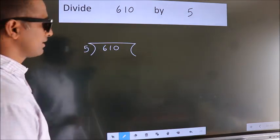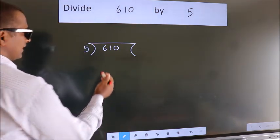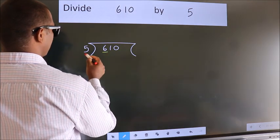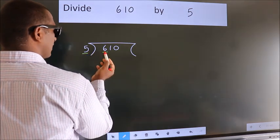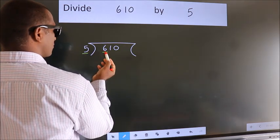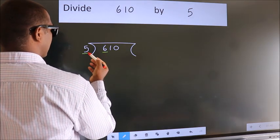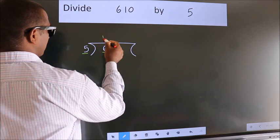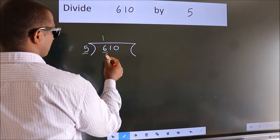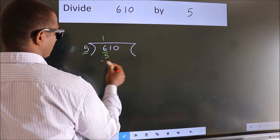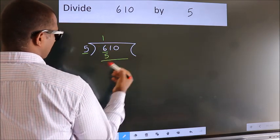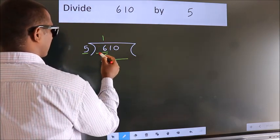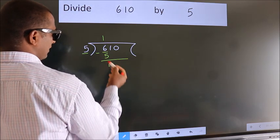Next, here we have 6, here 5. A number close to 6 in the 5 times table is 5 ones 5. Now we should subtract. We get 1.